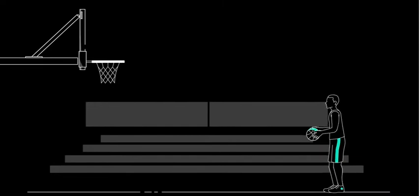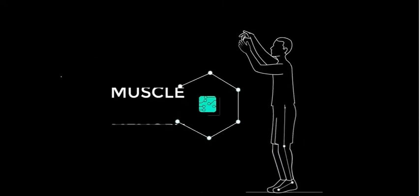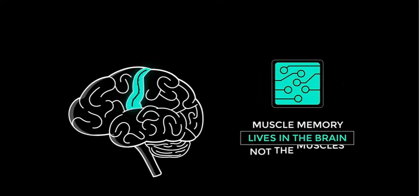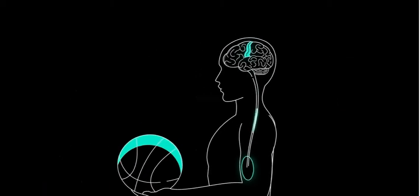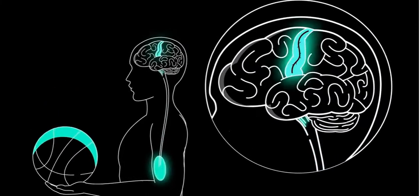Think about shooting a free throw. Know that feeling when you've got it down and don't even have to think about it? That's muscle memory. Here's the thing, muscle memory lives in the brain, not the muscles. Your brain controls everything your muscles do, and it does this by activating specific neural pathways for each and every movement.